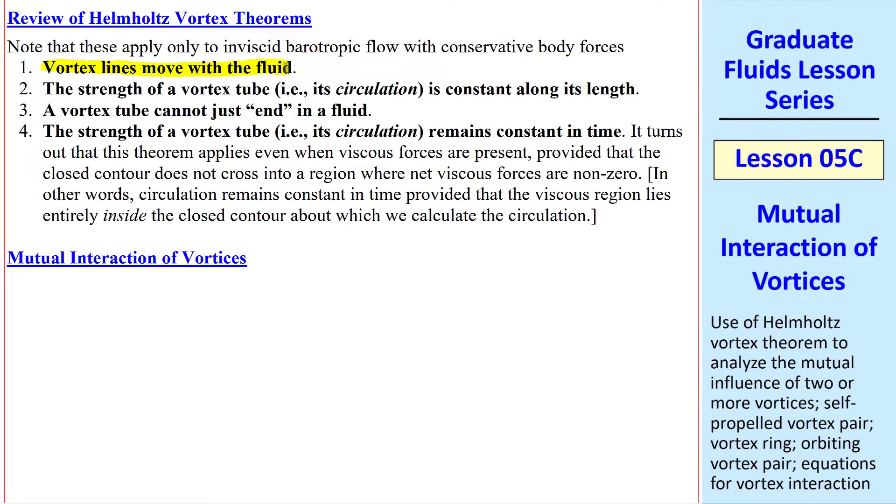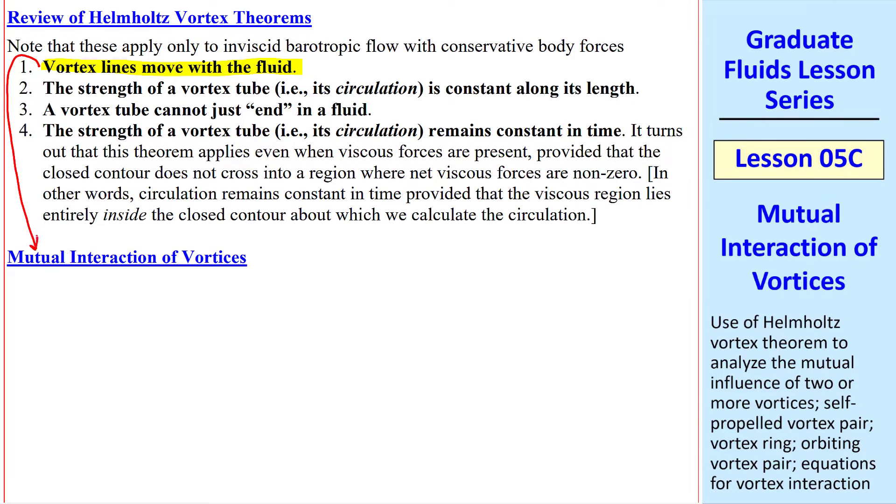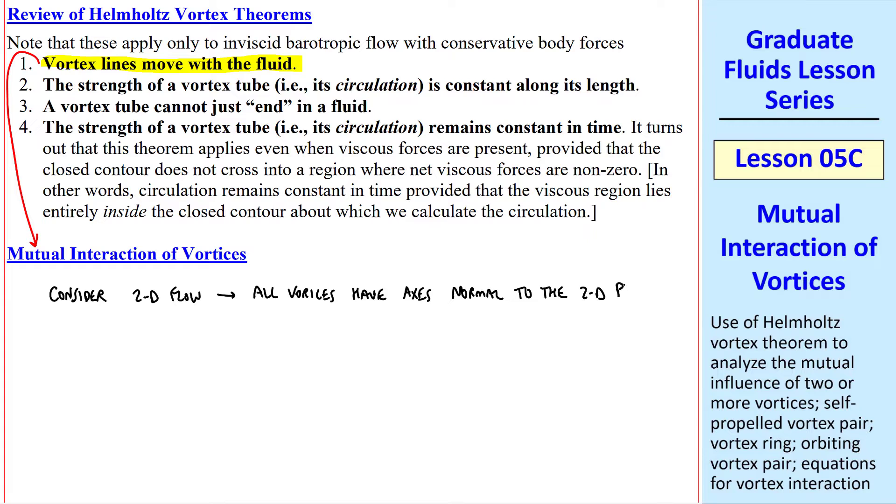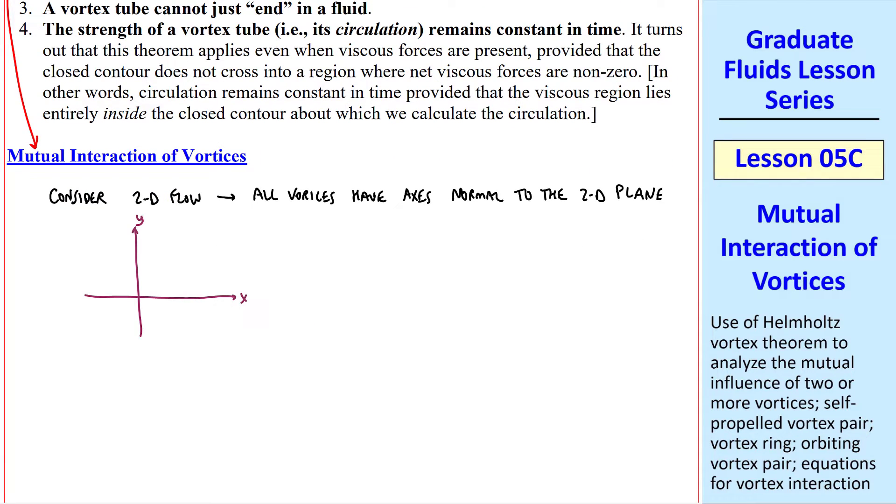Let's use this first vortex theorem to discuss the mutual interaction of vortices. We'll consider here only 2D flow, typically in the XY plane, where all vortices are aligned with their axes normal to the 2D plane. For example, in the XY plane, we can have a line vortex of circulation gamma, with vorticity vector pointing out of the page.